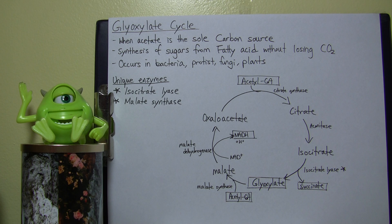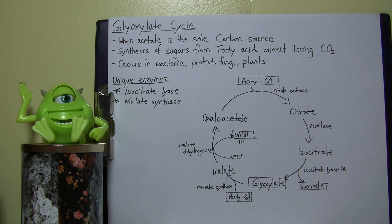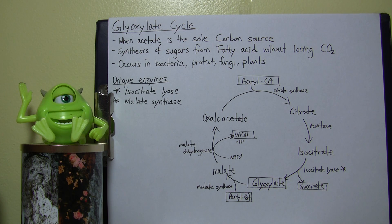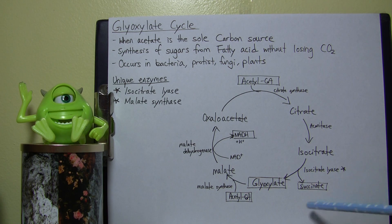This cycle is very beneficial for these organisms because it allows synthesis of sugars from fatty acids without losing any carbon dioxide. This is very important because acetate is only a two-carbon molecule, and losing carbon dioxide would be highly costly.